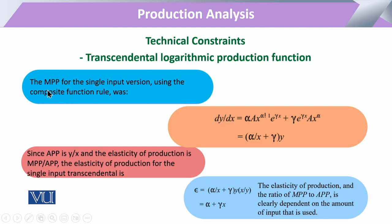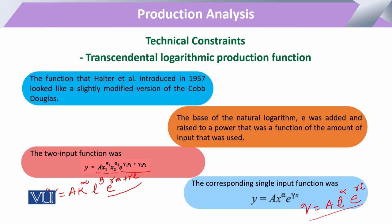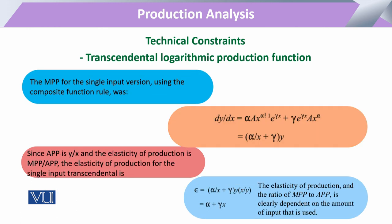The marginal physical productivity for the single input case is derived using the composite function rule — it is the change in output with respect to the input. Taking the first derivative of our production function Y equals A times the transcendental expression, we can obtain the marginal physical productivity. The average physical productivity is equal to Y divided by X — the ratio of total output to total input.